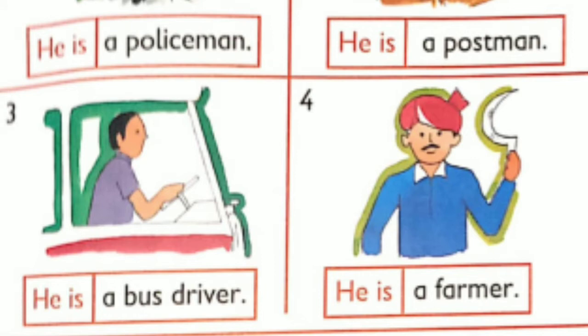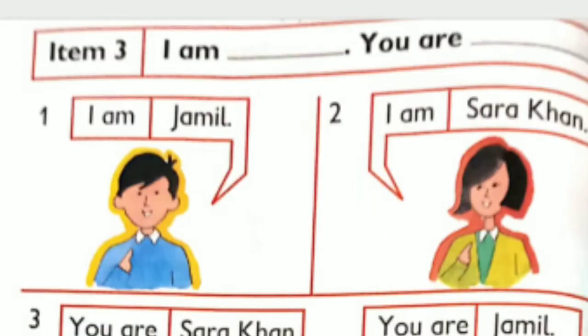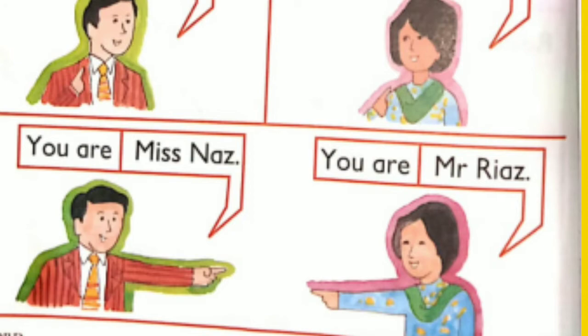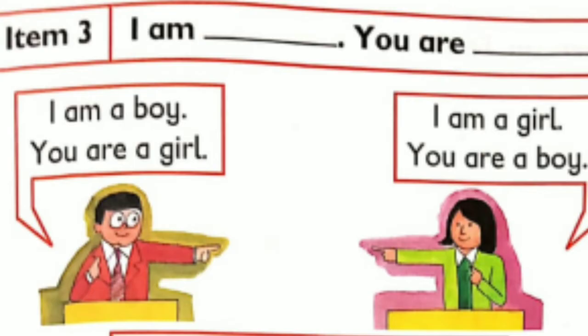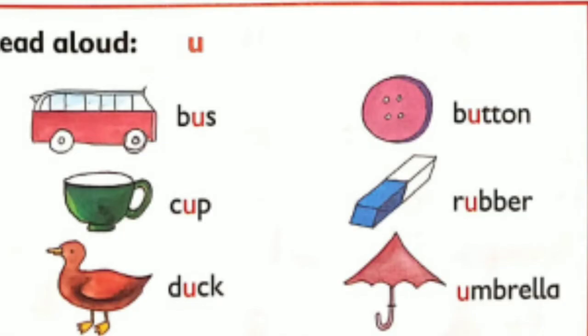Item 3 continued — I'm / You are. I'm Jamil. I'm Sarah Khan. You are Sarah Khan. You are Jamil. I'm Miss Ross. I'm Miss Ross. You're Miss Ross. You are Mr. Ross. I'm a boy. You are a girl. I am a girl. You are a boy. He's a boy. She's a girl. Review words: bus, cup, duck, button, rubber, umbrella.